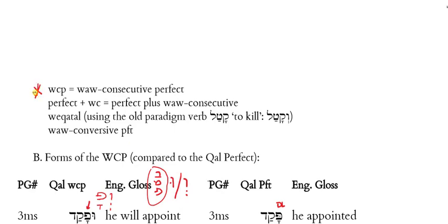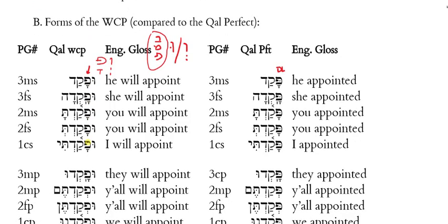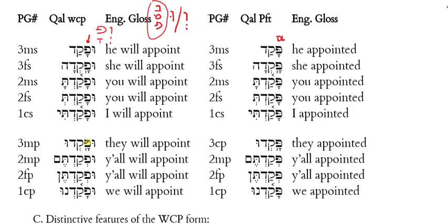Now let's look at how you form the WCP form, comparing the normal perfect with the WCP form. You learned paqad, paqadah, paqadta, paqadat, paqadti. Well, look at what these forms are like: 'he will appoint' is ufaqad. Where did this 'u' come from? The normal pointing of the vav is with a vocal sheva, but vocal sheva with the vav becomes 'u' before the letters bet, mem, and pay — those are the bump consonants. So this would have been v'faqad, but because pay is a bump letter it becomes ufaqad.